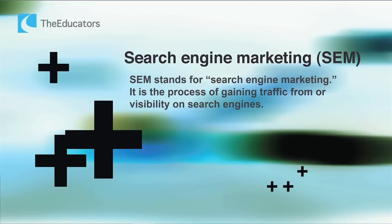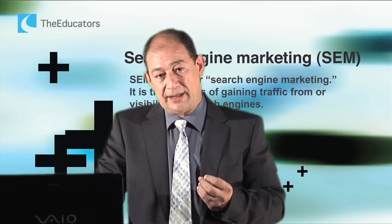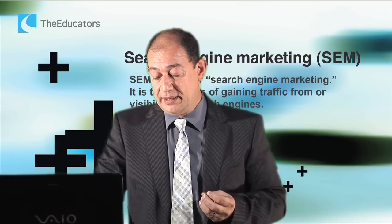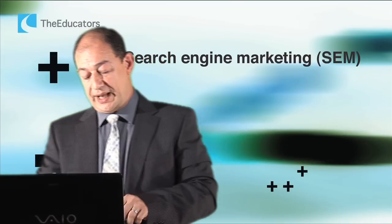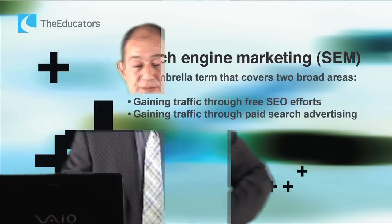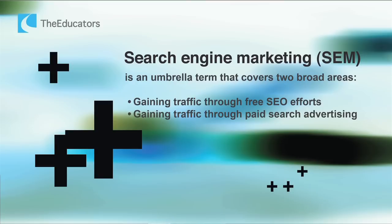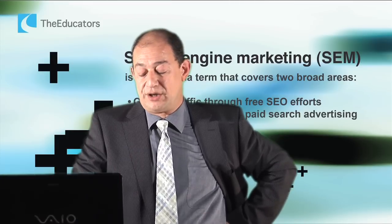Search engine marketing is about using search engines like Google for marketing purposes. The simple definition is: you want to gain traffic, you want to gain visibility, and hopefully traffic to your site using the search engines. There are two ways of doing that. One is by search engine optimization, and the other is search engine advertising, which costs you money — you're going to pay for it.